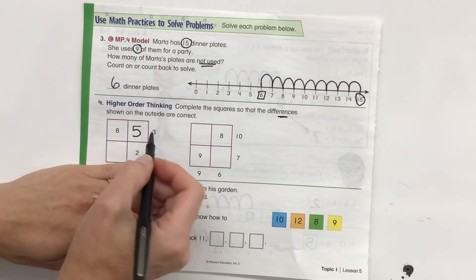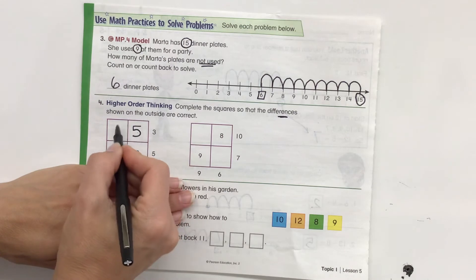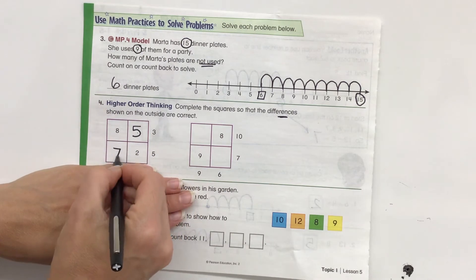Now what I can do is I can actually add back. Take a look at this. 3 plus 5 is 8. 5 plus 2 is 7.